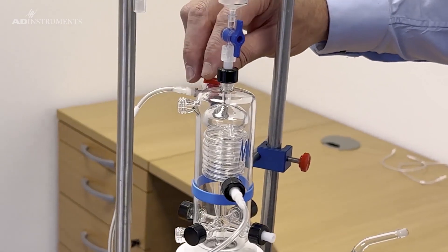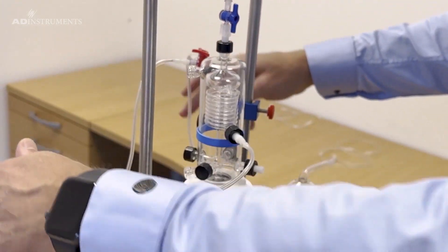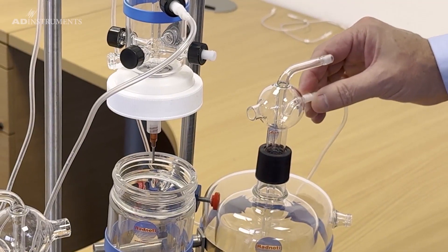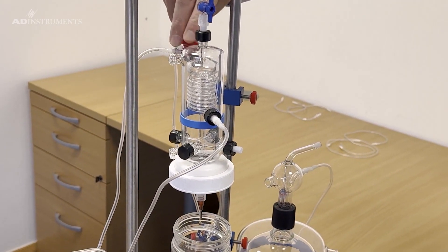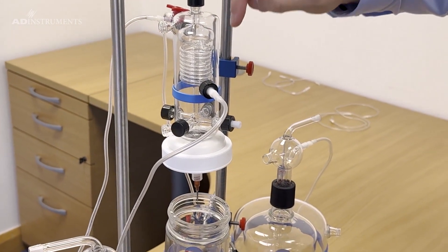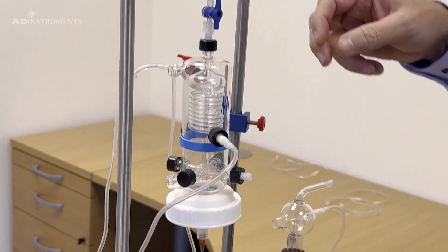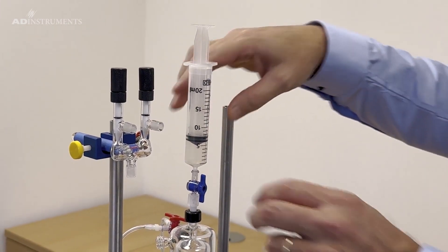When we're priming the system the overflow will be open and the perfusate can run off back into the perfusate reservoirs through the input ports of the gas bubblers. When this system is in operation the overflow will be closed, forcing the perfusate down into the aortic cannula. We've also added the damping syringe which we can control with a stopcock.